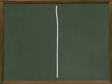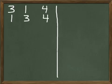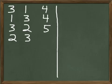Let's do the first one: 3 and 1 are 4. The next one is 1 and 3 are 4. Then we've got 3 and 2 are 5. And 2 and 3 are 5. And 3 and 3 are 6.